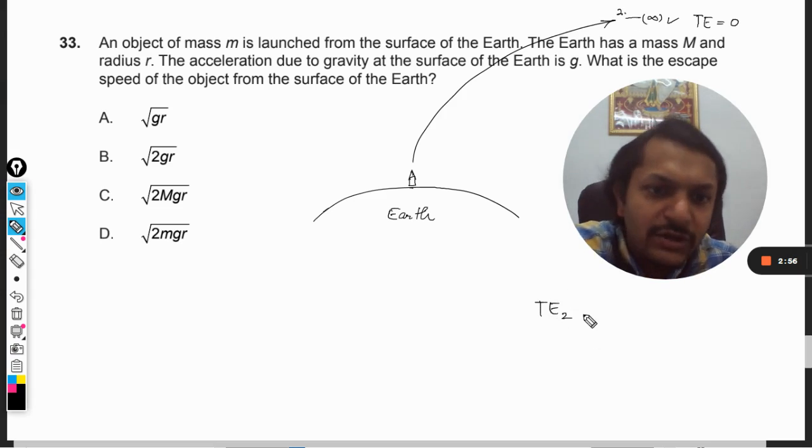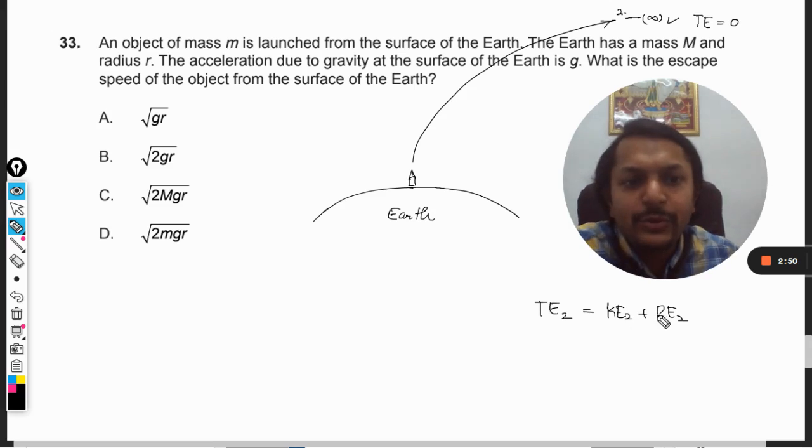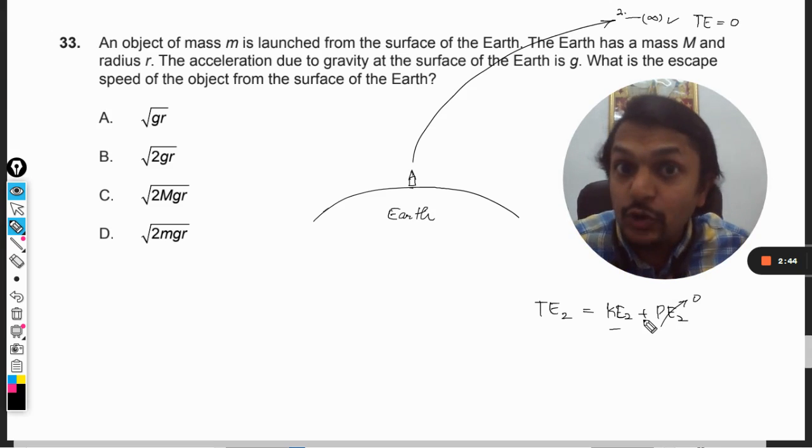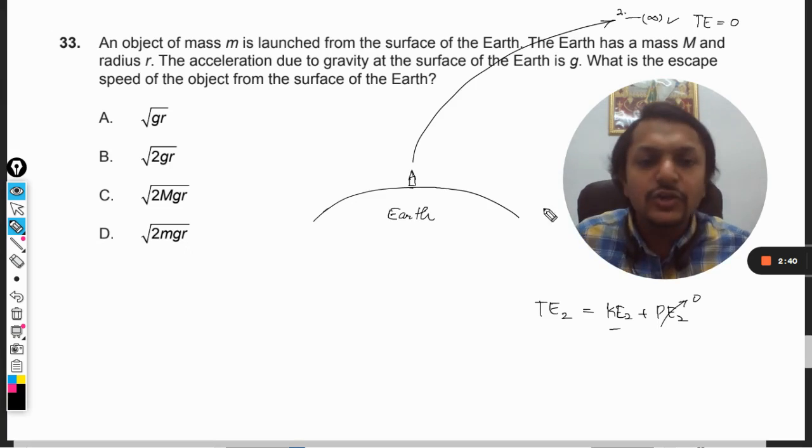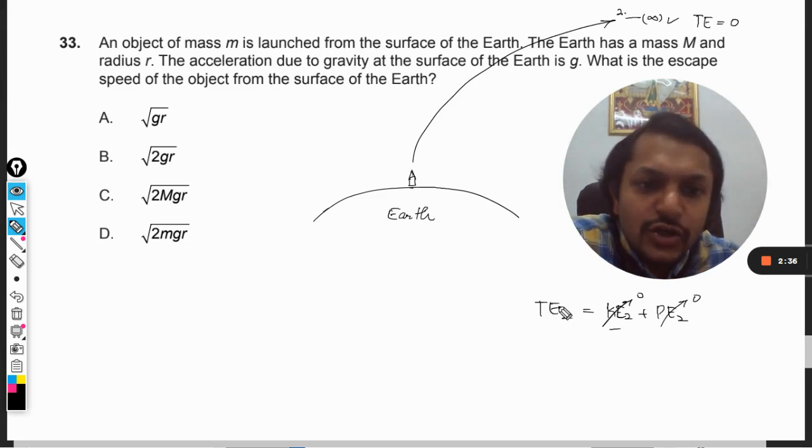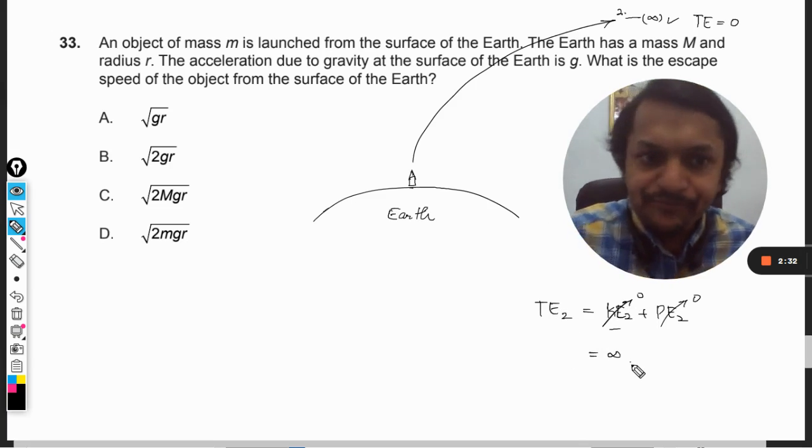At infinite distance, the total energy of the body will be taken as 0. So the total energy at point 2 will be kinetic energy at point 2 plus potential energy. We know that the potential energy at infinite distance is taken to be 0, and kinetic may or may not be 0, but because we want the minimum velocity, we take this energy also as 0.